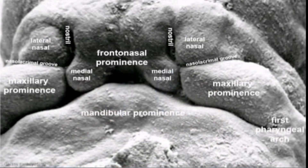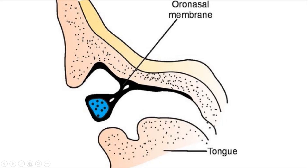Canalization of the nasolacrimal duct continues throughout the pregnancy and is finished just after birth. During the 6th week of development, the nasal pit deepens and forms a single cavity behind the intermaxillary region, which is separated from the stomodeum by the oronasal membrane.